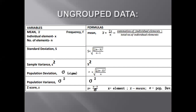For ungrouped data, we have the following variables and formulas. For your mean, it is represented as x-bar. To calculate your mean: x-bar is equal to the summation of your individual elements all over the total number of elements, written as sigma x all over n. For your standard deviation, it is represented as s. Your s is equal to the square root of the summation of the quantity of individual element minus your mean, squared, all over n minus 1.